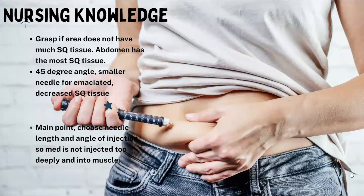If the patient doesn't have a lot of subcutaneous tissue, we inject at a 45-degree angle so the medication does not go into the muscle. If the patient has a lot of adipose tissue — a lot of fat in the abdomen — we can choose a longer needle and inject at a 90-degree angle, because we're not worried about the medication going into the muscular area given all that extra subcutaneous tissue.